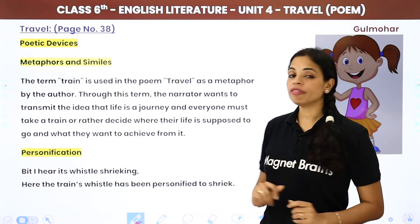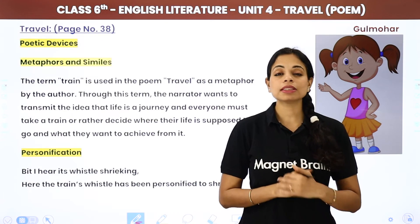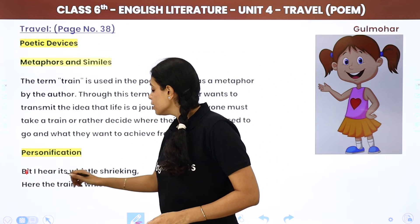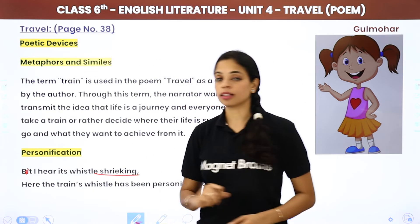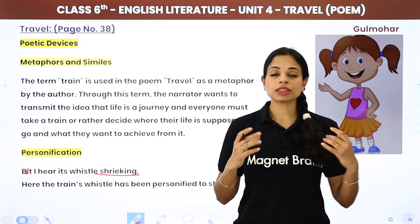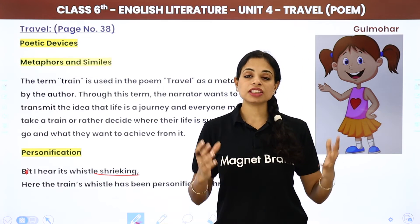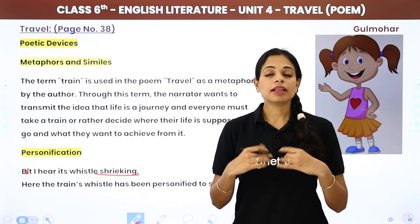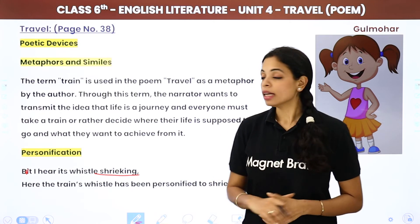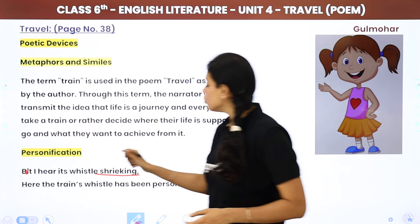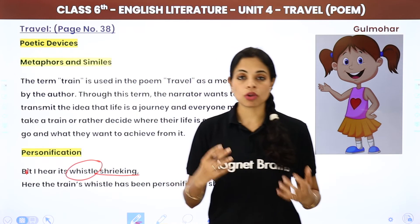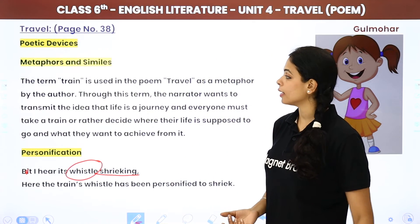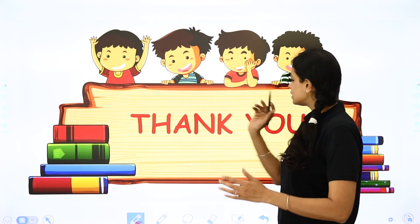Next, we have personification. The line 'I hear its whistle shrieking' is an example. A whistle does not actually shriek — we say living beings shriek. Here, the whistle has been personified as if it is some kind of human being that is shrieking. That is personification.